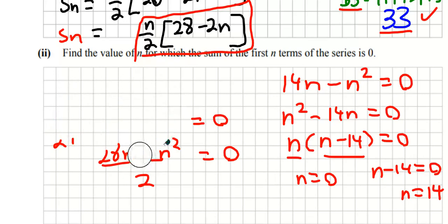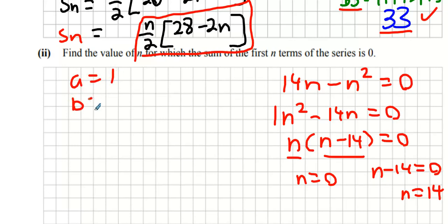I know some people tend to use the minus b formula a lot, so if you're using the minus b formula what you're going to say is that the a value is one, the b value is minus 14, the minus b value is plus 14, and the c value is zero.